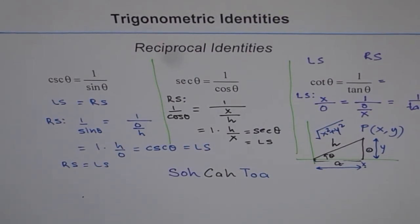We have completed the first of the four basic identities you need to know to prove trigonometric identities. Go through the other three as well. I have about 100 examples on trigonometric identities which will make you an expert on this topic. I hope you like it — share with your friends and put your comments.